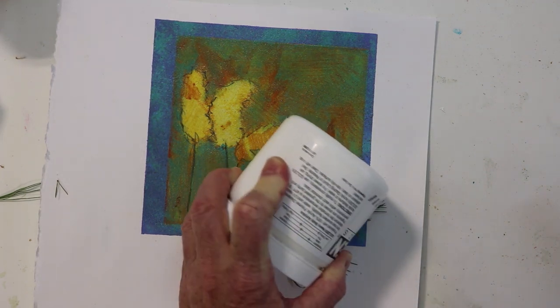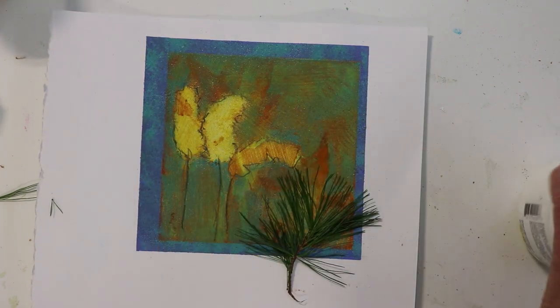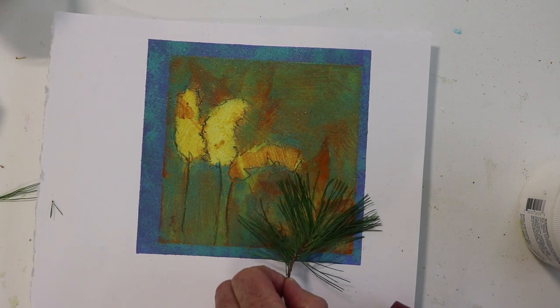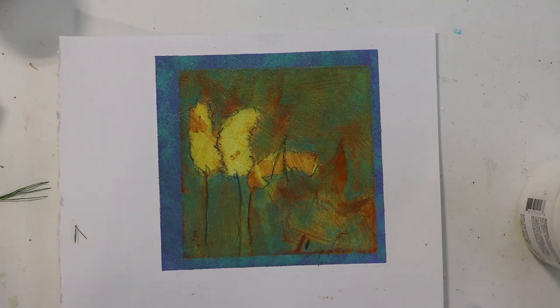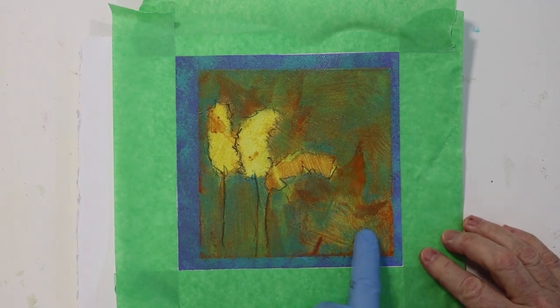Here I added a white pine branch, rolled it on the surface, lifted it off, and hoped that the branch embossed the hot surface of the embossing powder, leaving an impression.